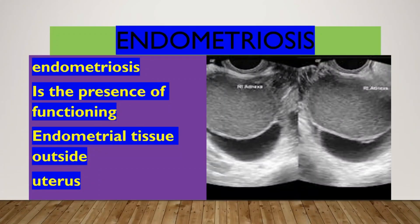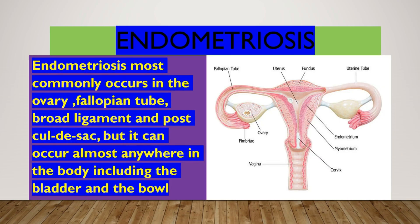What is endometriosis? Endometriosis is the presence of functioning endometrial tissue outside the uterus. It most commonly occurs in the ovary, fallopian tube, broad ligament, and pouch of Douglas, but it can occur almost anywhere in the body, including the bladder and bowel.